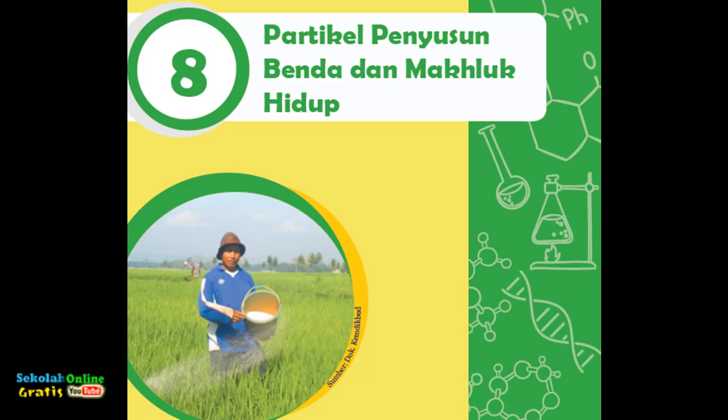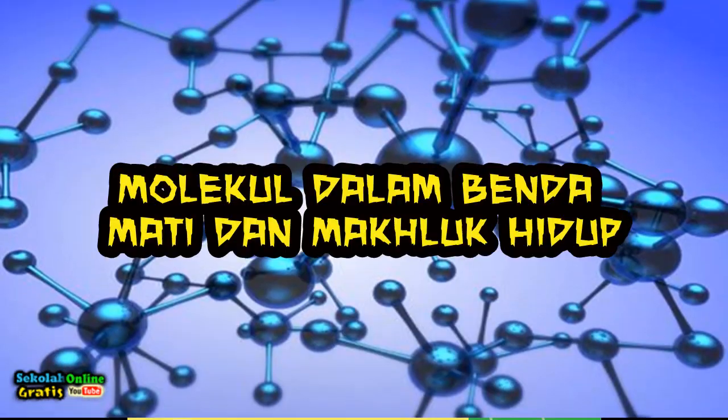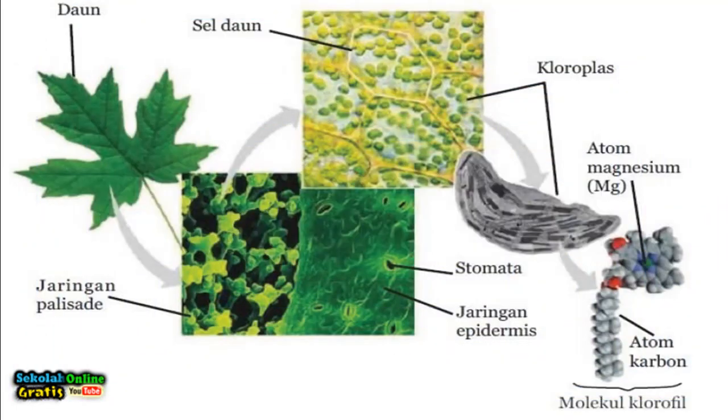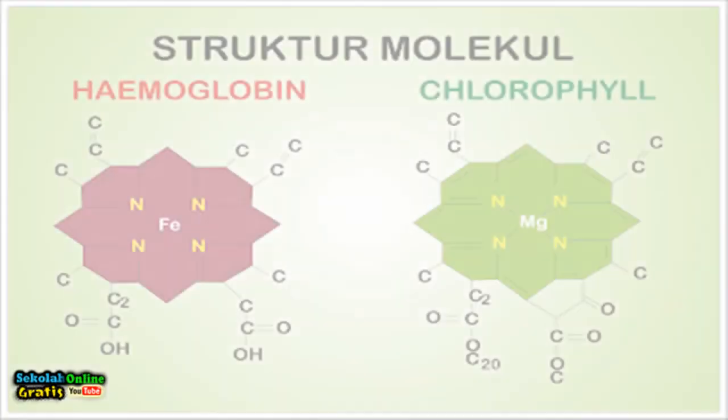Molecules in inanimate and living things. In nature there are processes of formation of substances such as photosynthesis and processes of decomposition of substances such as leaf decay. Matter in nature is composed of very small matter called atoms. Photosynthesis takes place in organelles called chloroplasts.